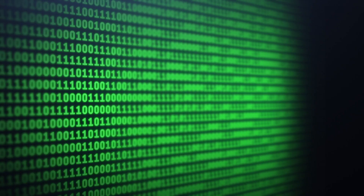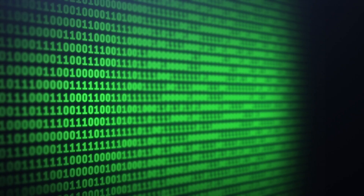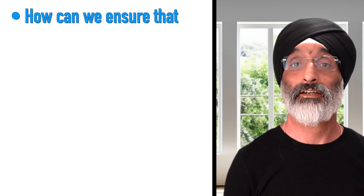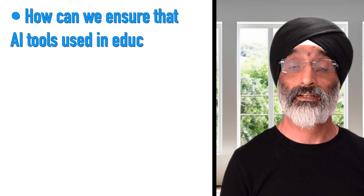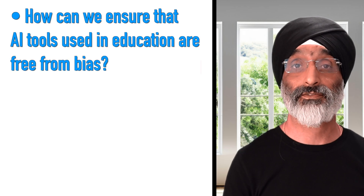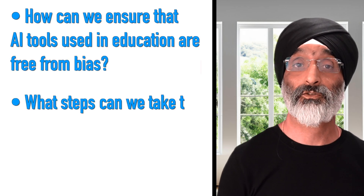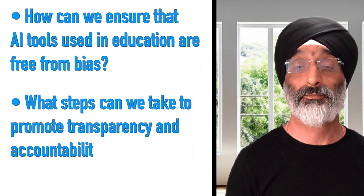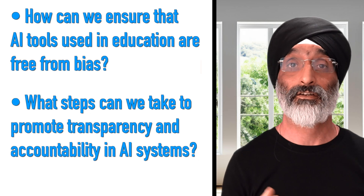Transparency is another key issue. Students and educators should have a clear understanding of how AI systems make decisions. This can help build trust and allow for meaningful oversight and accountability. When it comes to understanding AI ethics in education, consider these questions: How can we ensure that AI tools used in education are free from bias? What steps can we take to promote transparency and accountability in AI systems?